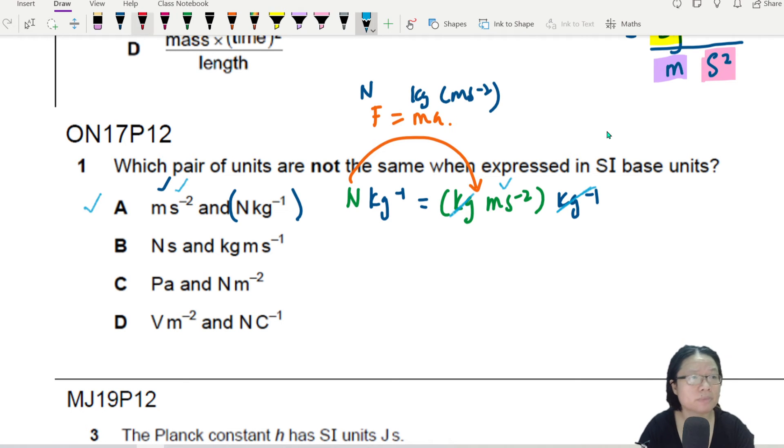Let's check the second one. So the second one, you have newton second. We already know the base SI for Newton is kg ms negative two. And then we times s. So I get kg ms negative one. So you can see kg ms negative one, kg ms negative one. So we're good. This is solid.